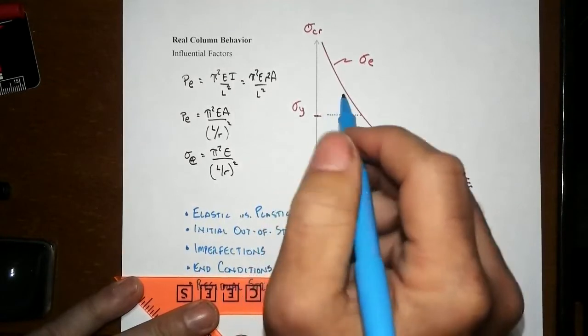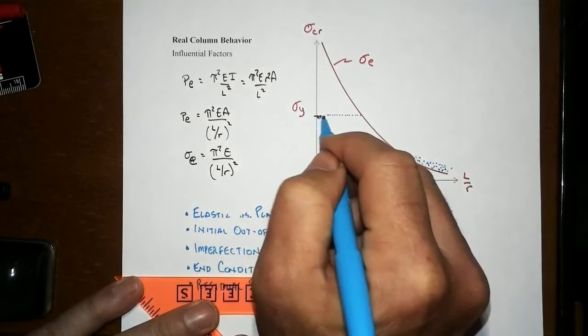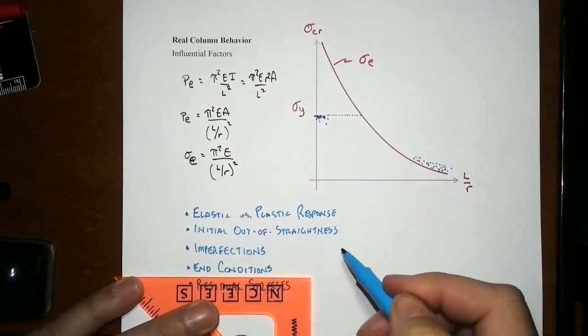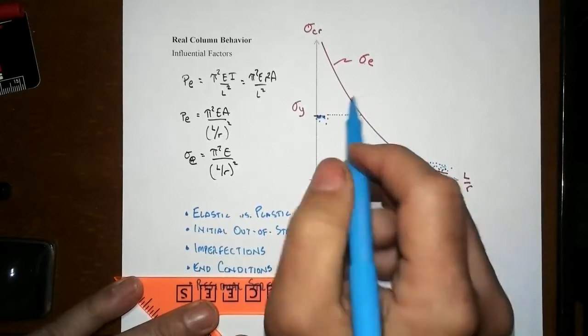If you have a short stub and you're squeezing it, you're just going to get the basic compressive yield stress. Those values are going to be around in there. But when we get into this intermediate region, what happens is the data points start having a lot more scatter.